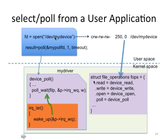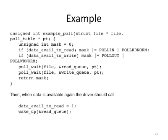Another example shows a poll function in the kernel module that checks both read and write, putting the calling process into both a read-queue and a write-queue.